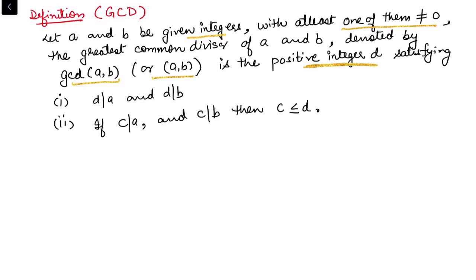The greatest common divisor is a positive integer d satisfying two properties. Since it has to be the greatest common divisor, it is common, so it divides both integers. And also it is greatest, so for any other divisor c, if c divides a and c divides b, then c must always be less than or equal to d. If d satisfies these two conditions, then d is the greatest common divisor of a and b.